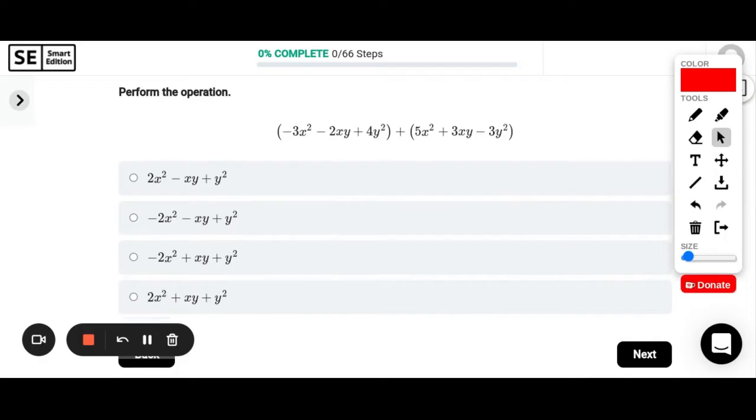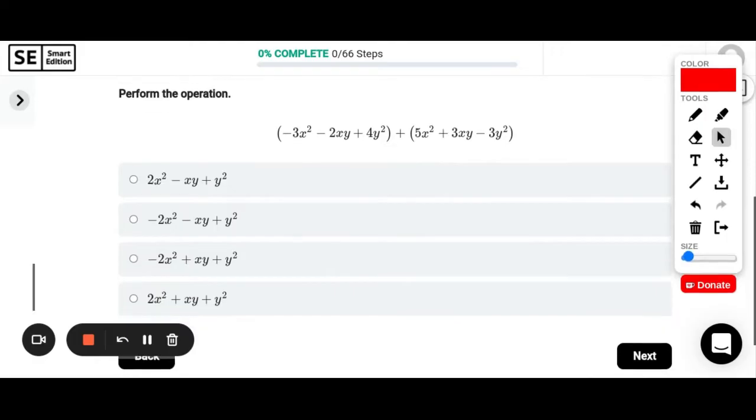Okay, perform the operation. So here because I have a plus sign in between, these are in parenthesis but this plus sign actually means the parenthesis don't really matter in this case. If it was a subtraction sign it would be different. But with this plus sign all I have to do is just combine like terms. So I see x squared: negative 3x squared plus 5x squared would be positive 2x squared. Negative 2xy plus 3xy would be a positive xy. And then 4y squared minus 3y squared would be a positive y squared. And then there's nothing to combine here, so that is my final answer.